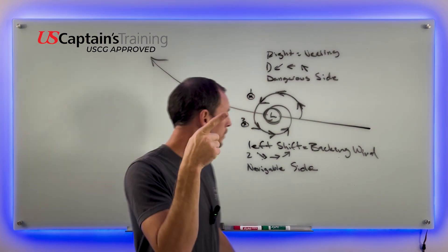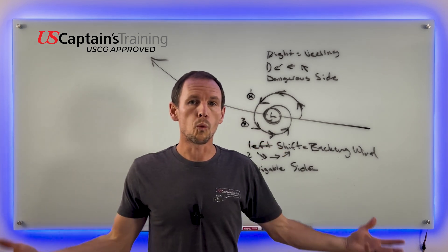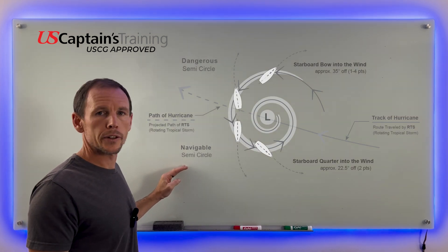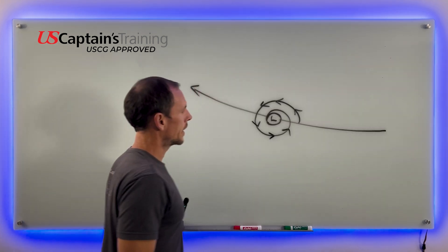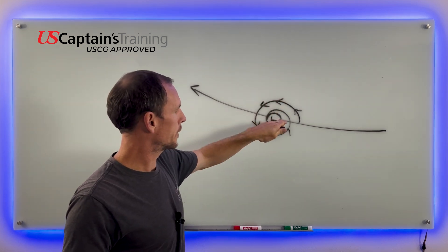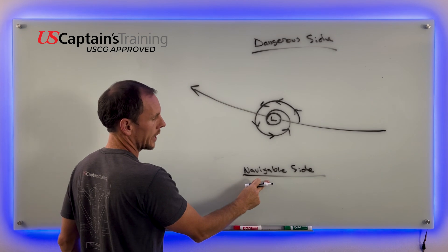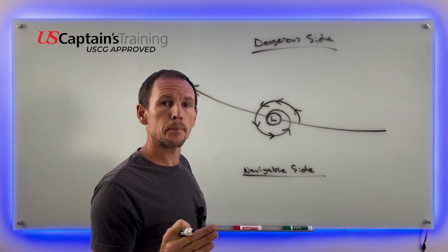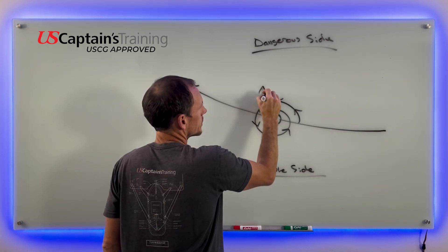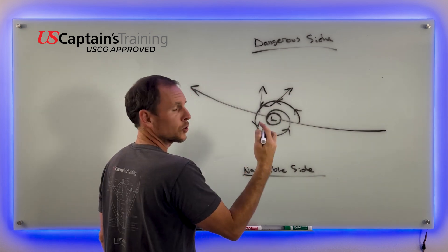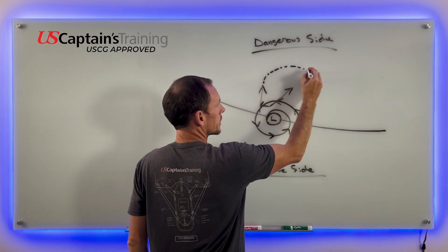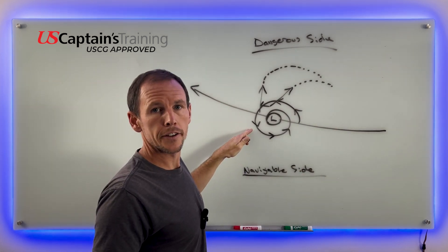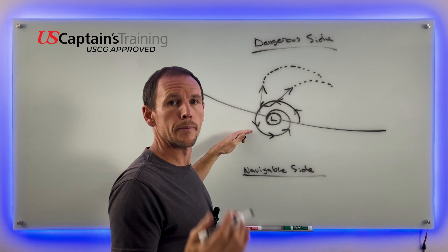Once we have this information, check this diagram from the reading — it lays out how you maneuver to avoid the center of a low pressure. Here's the low pressure with wind coming into the middle: track, path, dangerous side, navigable side. If you find yourself on the dangerous side, put the wind one to four points off your starboard bow and make as much way as you can. As the storm passes, your course will curve and take you away from the path of the low. If on the navigable side, put your starboard quarter two points off the wind and make as much way as possible.